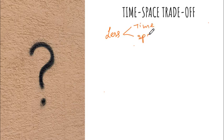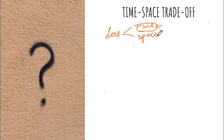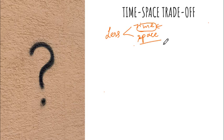But achieving both less time and less space is practically not possible. So we always need to compromise one over the other. If we try to increase the execution time for an algorithm, the space will decrease because the algorithm takes more time at the cost of space. That's why it's important to consider both time and space complexity when analyzing an algorithm.